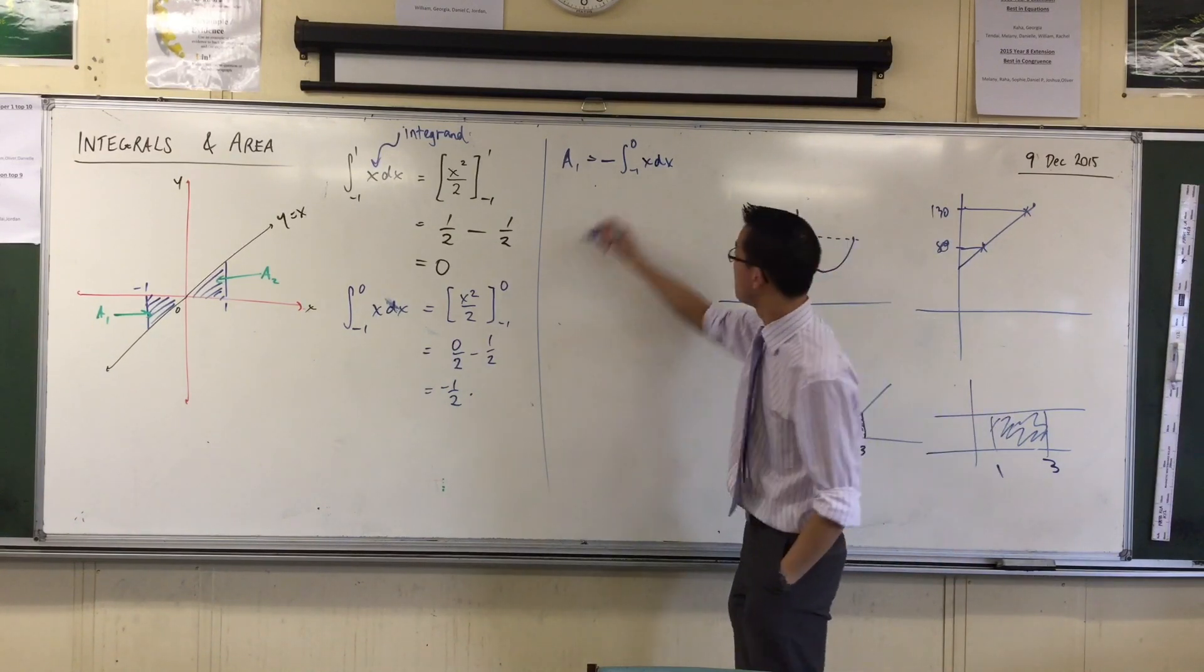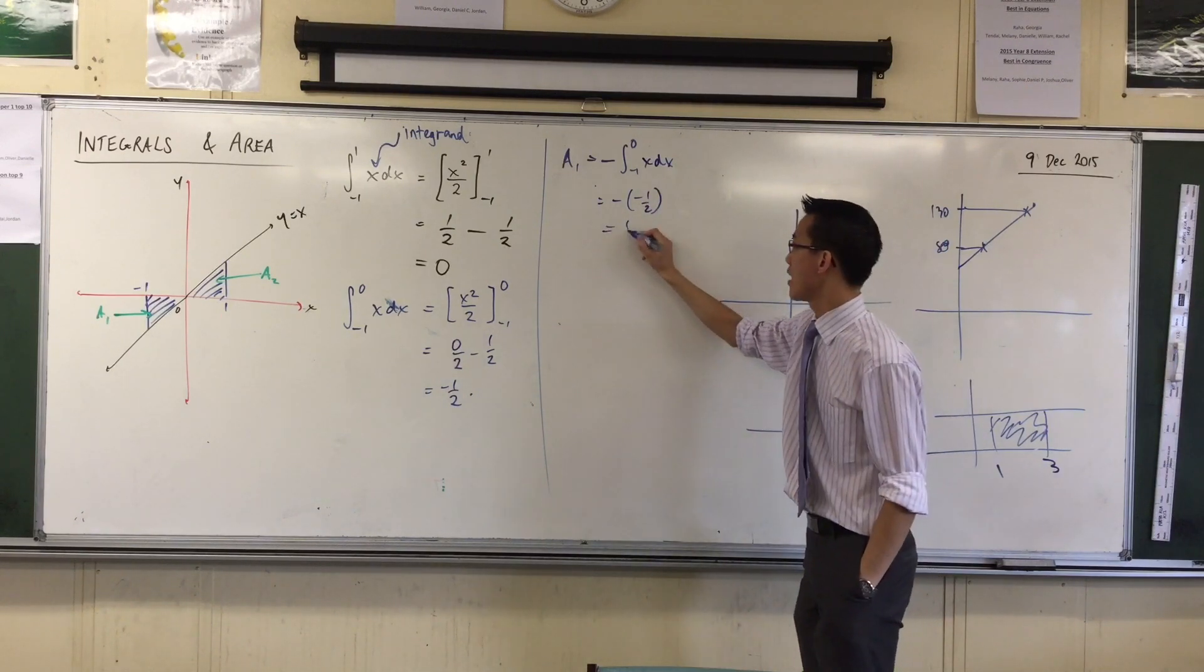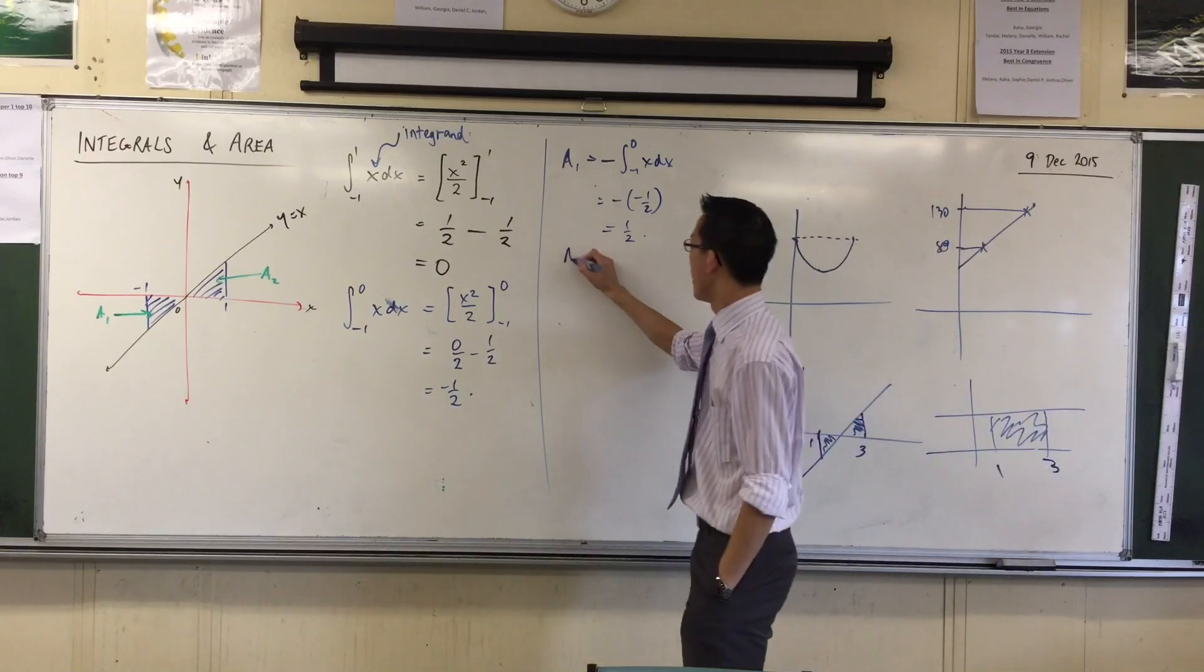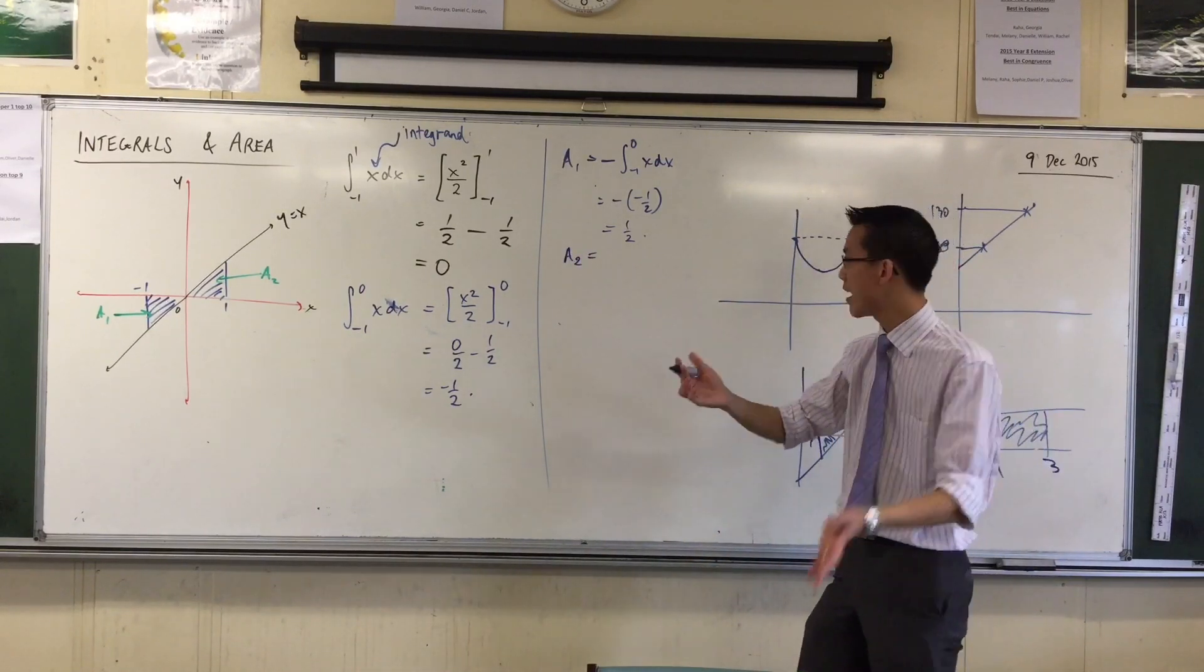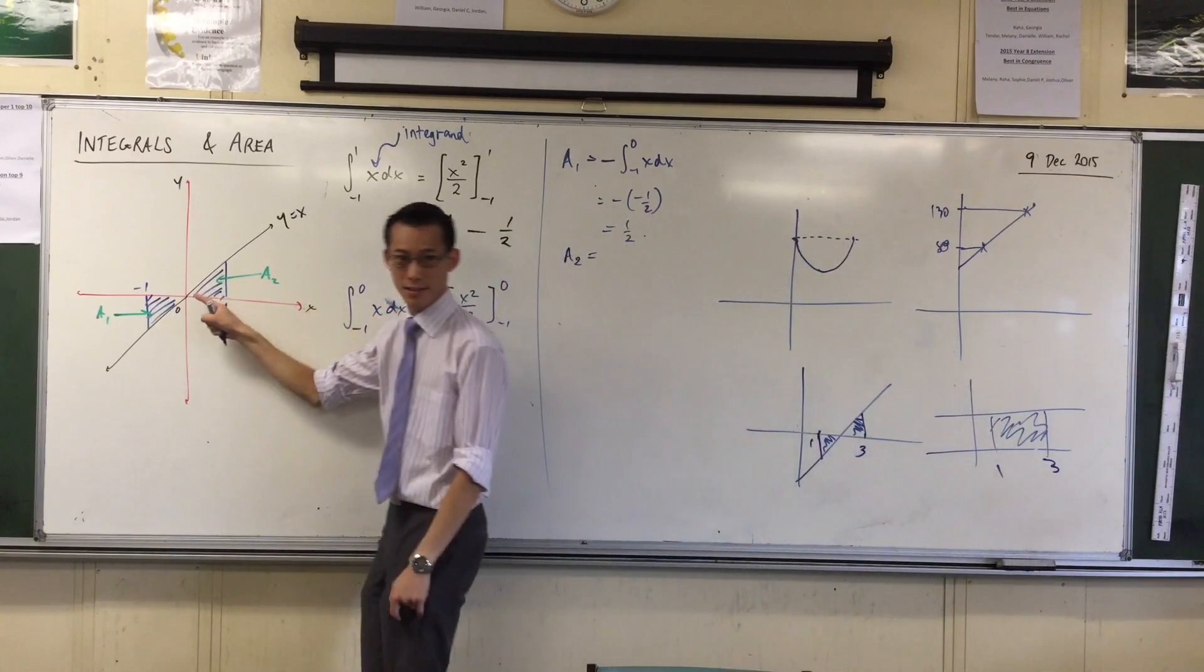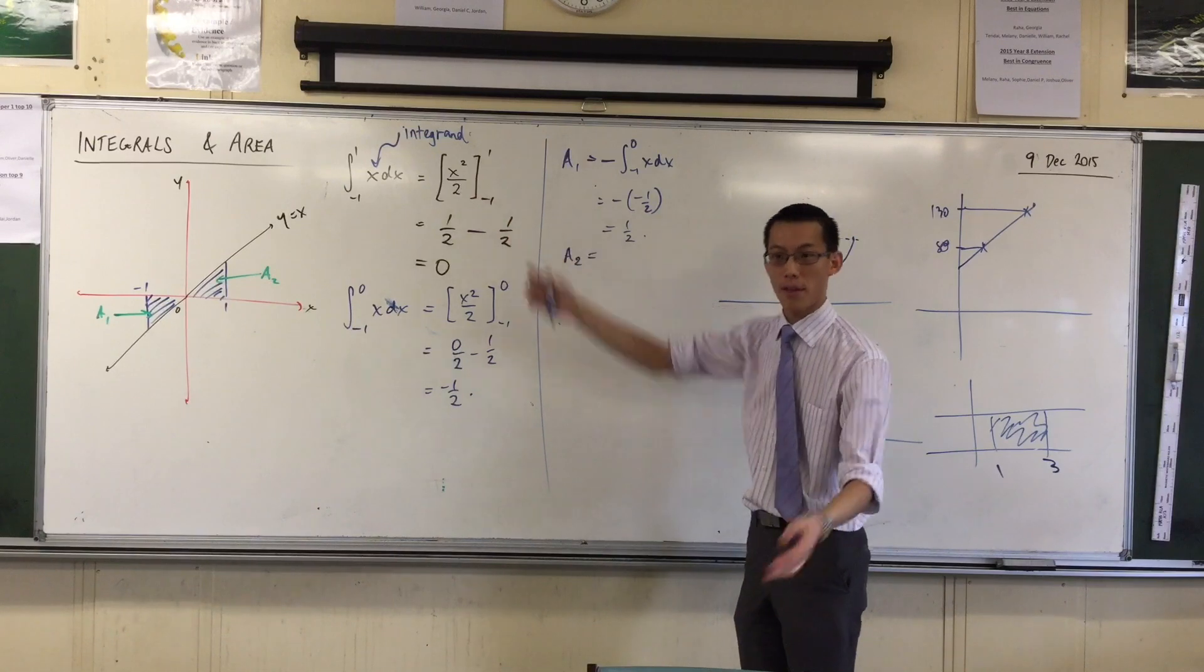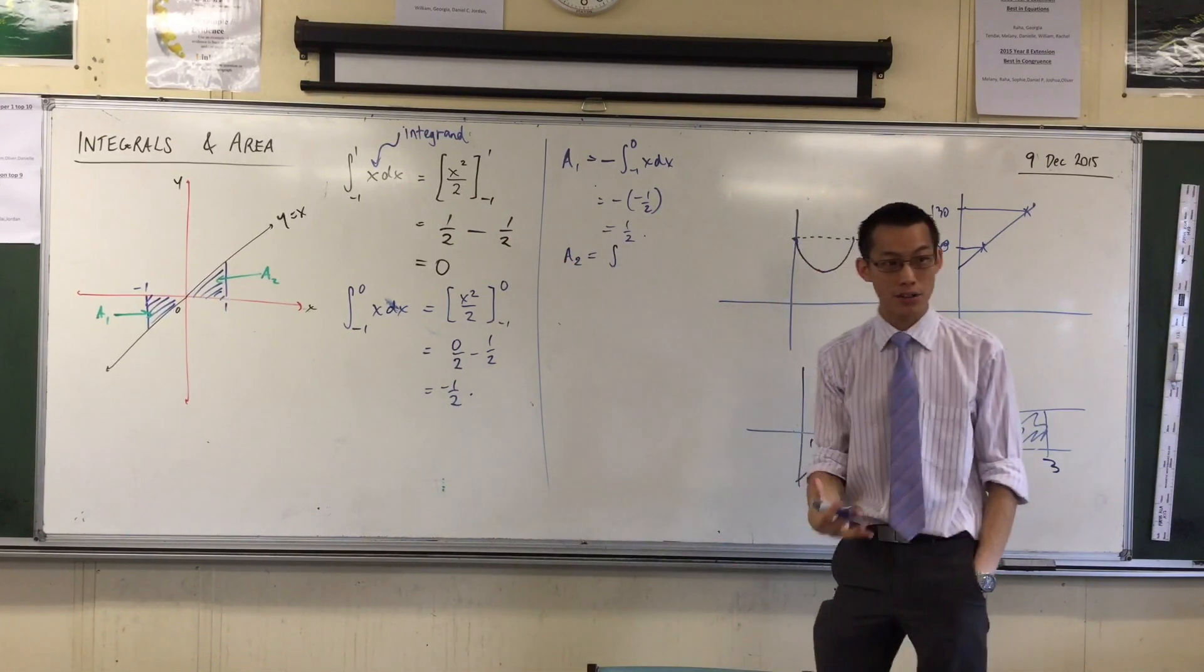because I can see it's beneath the axis. If what I want is the actual area, then I have to slap a minus sign on the front. And then everything proceeds as it did before. I'm still going to get the same number out. So it's negative, negative a half. And so that triangle there has the area of a half.